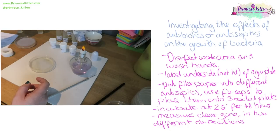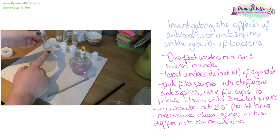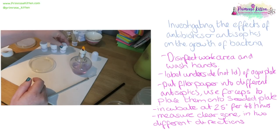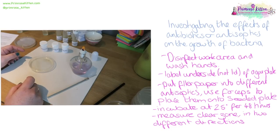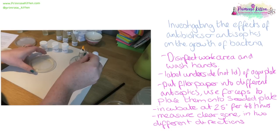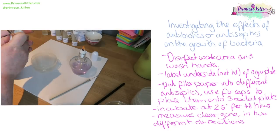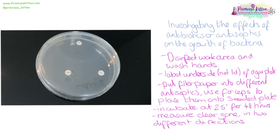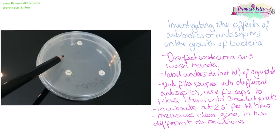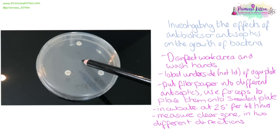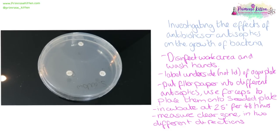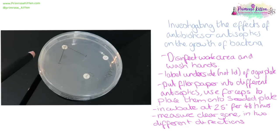When testing the effect of antibiotics or antiseptics on bacteria, make sure your work area and hands are clean — treat all bacteria as potentially pathogenic. Label the underside of the agar plate (not the lid). Place filter paper discs containing antibiotics on the pre-seeded plates using forceps, then incubate at 25°C for 48 hours. Measure the clear inhibition zones in two different directions — ideally measure the diameter, though in some cases only the radius is measurable if the zone is very large.